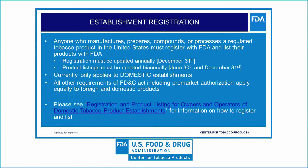Another question we are frequently asked is whether importers must register their establishments and list their products with FDA. Section 905B of the Food, Drug, and Cosmetic Act, or FD&C Act, requires every person who owns or operates any establishment in the U.S. engaged in the manufacture, preparation, compounding, or processing of a regulated tobacco product to register with the FDA, and every registrant must file a list of its regulated tobacco products in accordance with Section 905I. Establishment registration and product listing requirements currently apply only to those persons who own or operate domestic establishments engaged in manufacturing tobacco products.